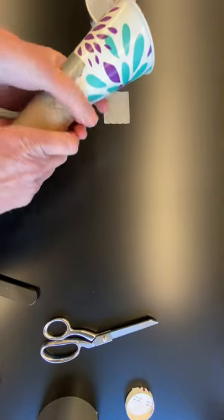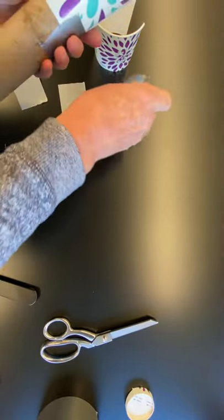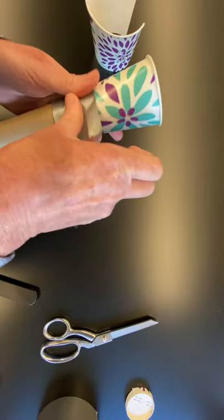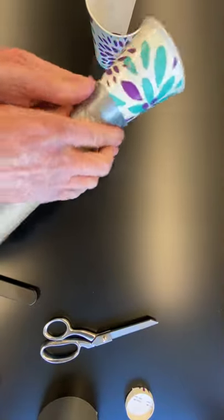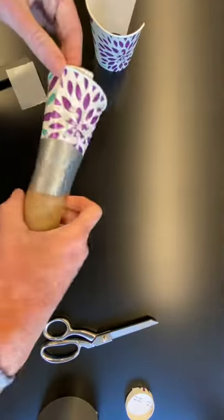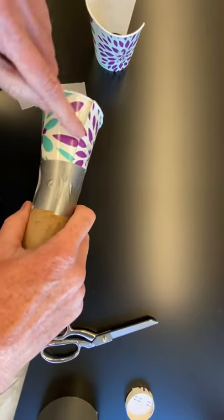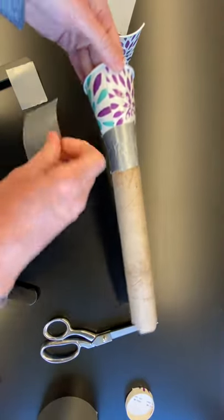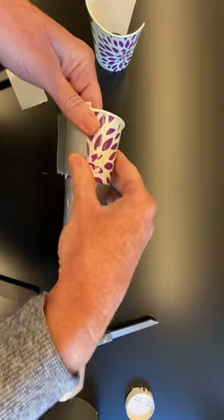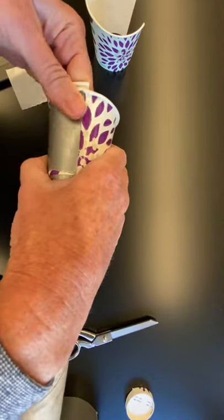So I can secure my cup onto the end of the paper towel roll like this. And then where I cut it down the side of the cup here, I'm also going to tape this piece closed like that.